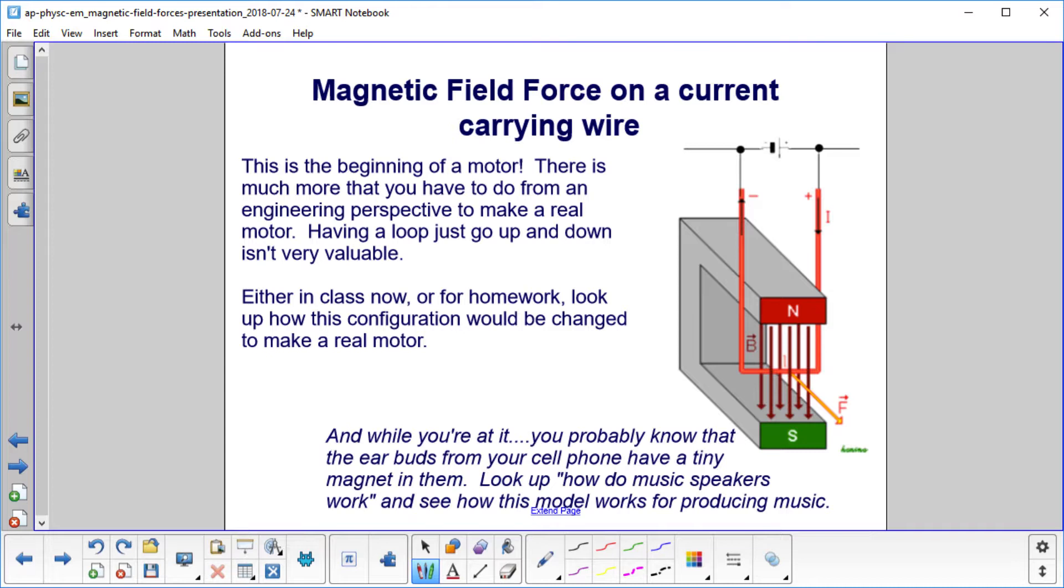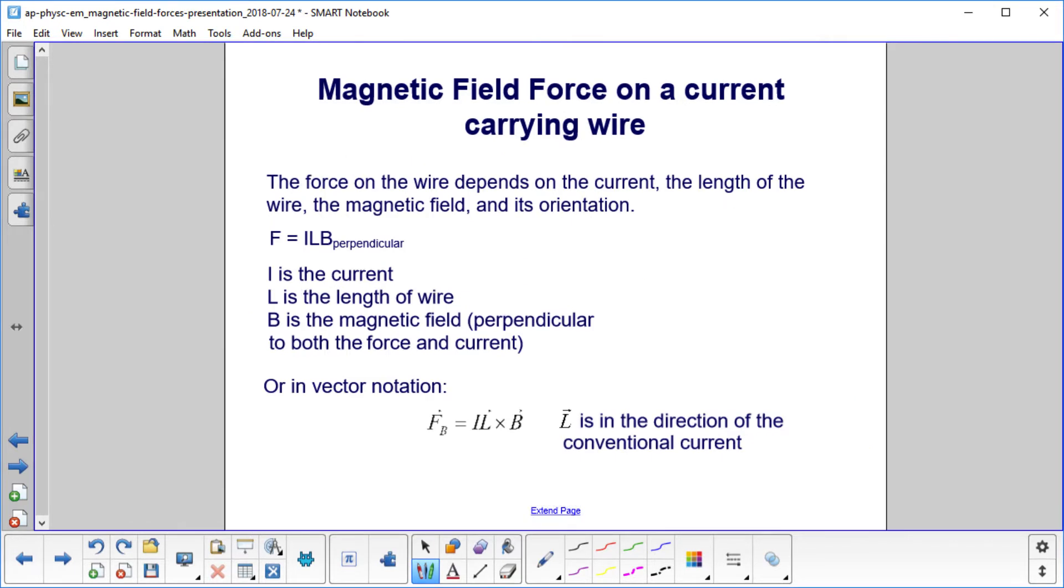Obviously, there's much more you have to do from an engineering perspective to make a real motor. Having the loop just go up and down isn't terribly valuable. Either in class or for homework, look at how this configuration would be changed to make a real motor. And while you're at it, you probably know that earbuds from your cell phone have a tiny magnet in them. Look up how music speakers work and see how this model works for producing music.